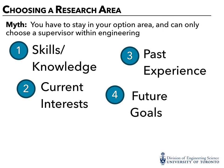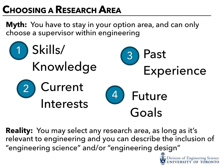While you should let these things help determine what area you want to work in, you're allowed to research in almost any area, as long as it's relevant to engineering and as long as you can describe the inclusion of engineering science or engineering design within the context of the project. So you don't have to stay in your option area. For example, if you are an ECE student and you're interested in implementing algorithms for financial analysis, that's perfectly reasonable, as long as the project includes some elements of engineering science and engineering design.